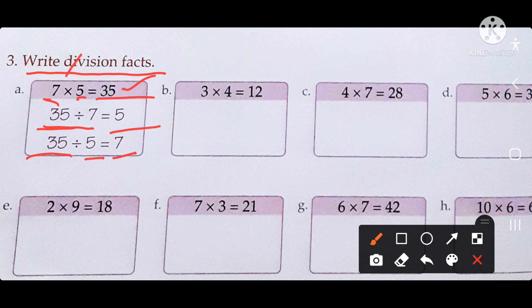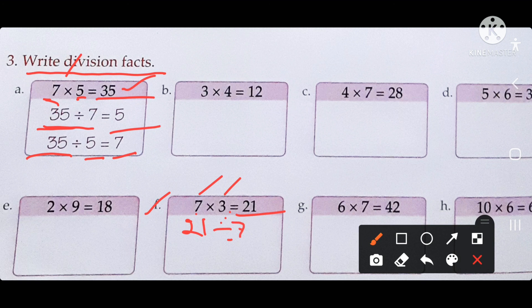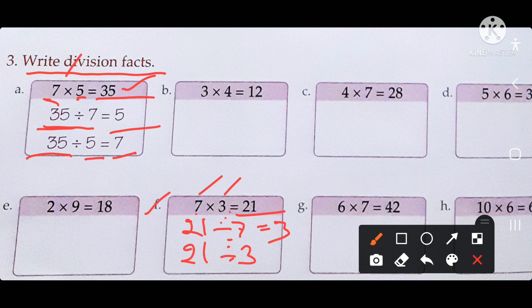The next question, number F: the first number is 7, the second number is 3, and their product is 21. Divide 21 by 7 — count the table of 7: 7 ones are 7, 7 twos are 14, 7 threes are 21 — so the quotient is 3. Then 21 divided by 3 gives quotient 7. Follow this process for the rest of the questions and do them at home. Thank you so much.